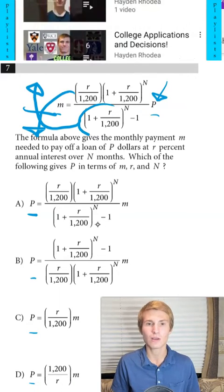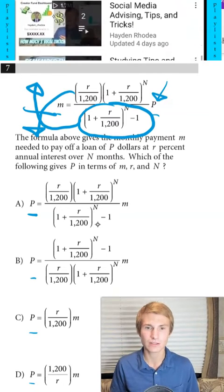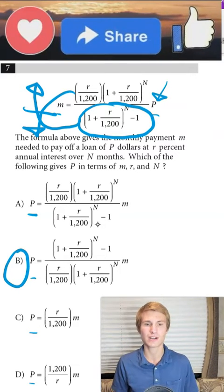Thus we know our answer is going to have to have 1 plus R over 1,200 N minus 1 on top. We take a look and find the only answer choice that has that. That's going to be B. B will be our correct answer.